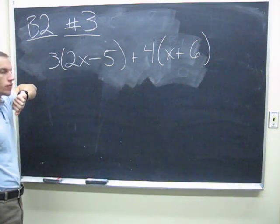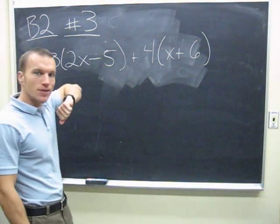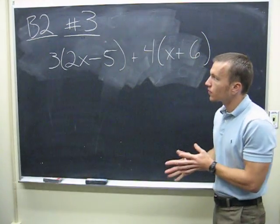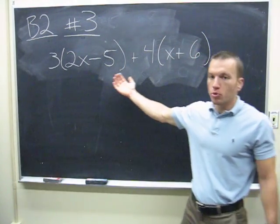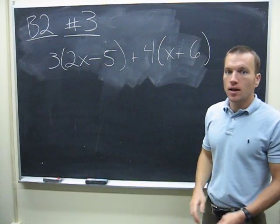Alright, so the directions are simple, they say to simplify. In order to simplify this, the first thing we need to do is get rid of these parentheses. We do that by multiplying.